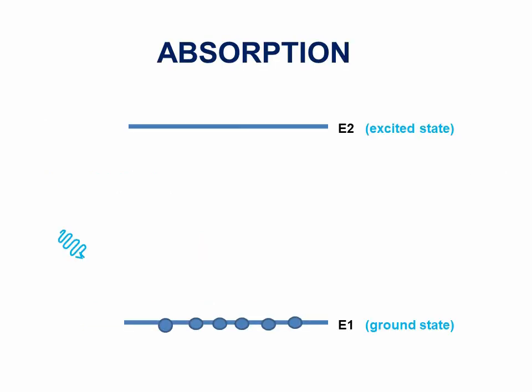The first process is absorption. An atom in the ground state absorbs the photon of radiation of energy and goes to excited state. Here, upward transition takes place. This process is called absorption.